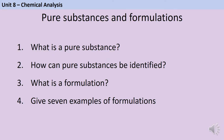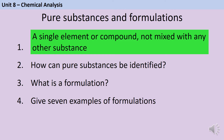The first part of Unit 8 is about pure substances, which in chemistry means a single element or compound not mixed with anything else. Pure substances can be identified by their melting points and boiling points, because they melt and boil at specific temperatures. This means you can look up the temperature in a data book, and that substance will melt and boil sharply at that temperature, whereas an impure substance might melt or boil over a range of temperatures and these wouldn't match the data book value.